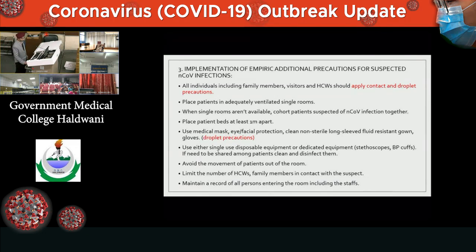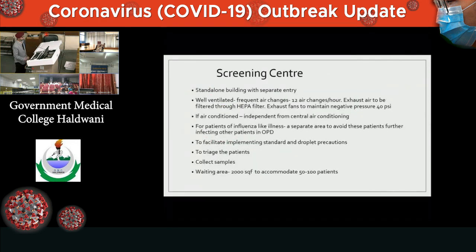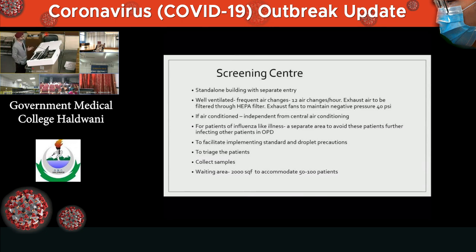Regarding the screening center: these cases should not be handled in common OPDs. There should be a dedicated screening center — a standalone building with a separate entry, well-ventilated with 12 air changes per hour. Exhaust air should be filtered through a HEPA filter, and exhaust fans should maintain a negative pressure of 40 PSI. Air conditioning should be independent from the central air conditioning system. Separate areas for influenza-like illness patients should not be mingled with general OPDs. The center should have at least 2,000 square feet of waiting area to accommodate 50 to 100 patients.